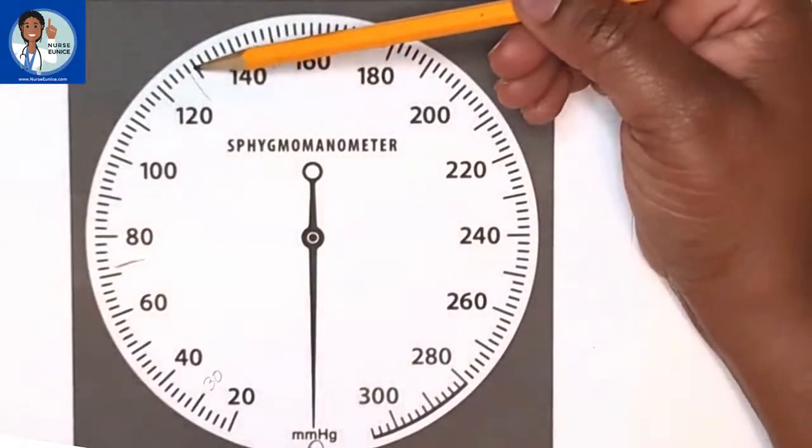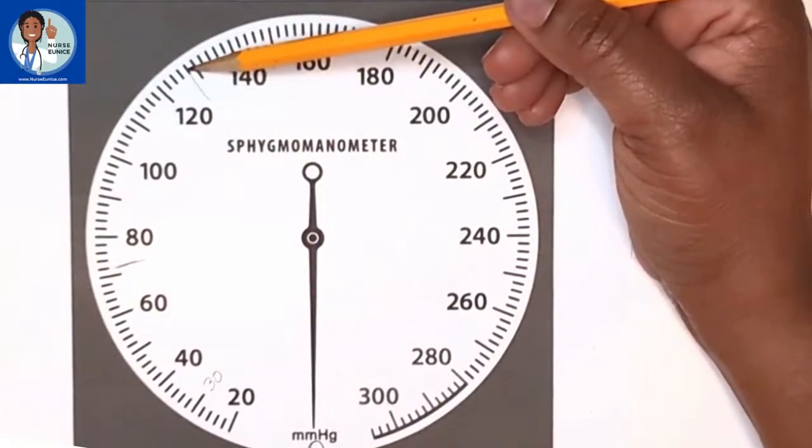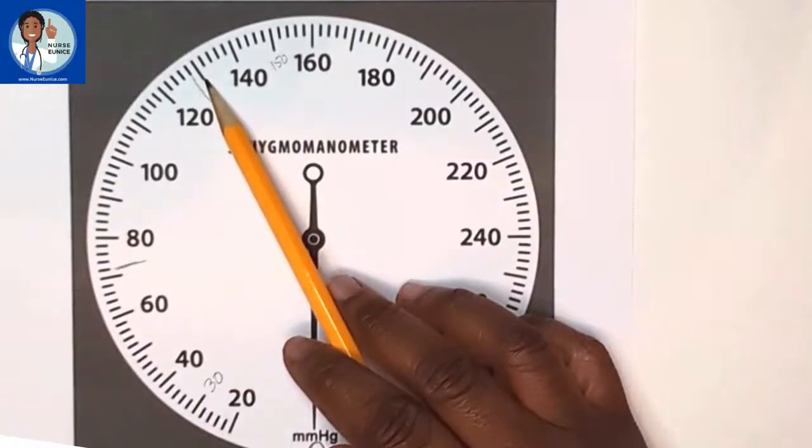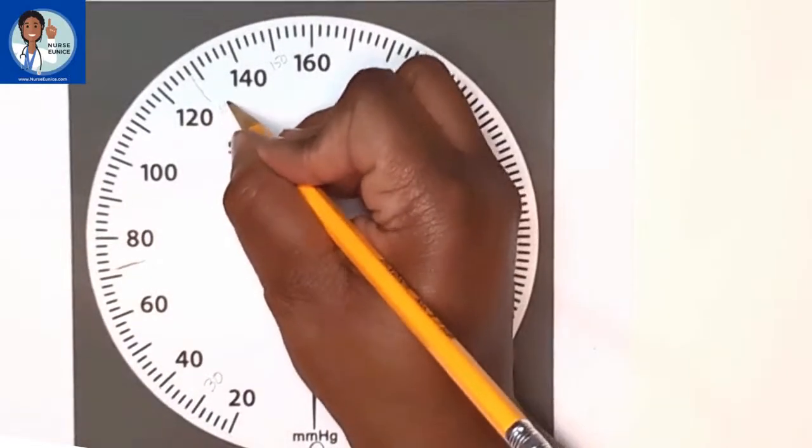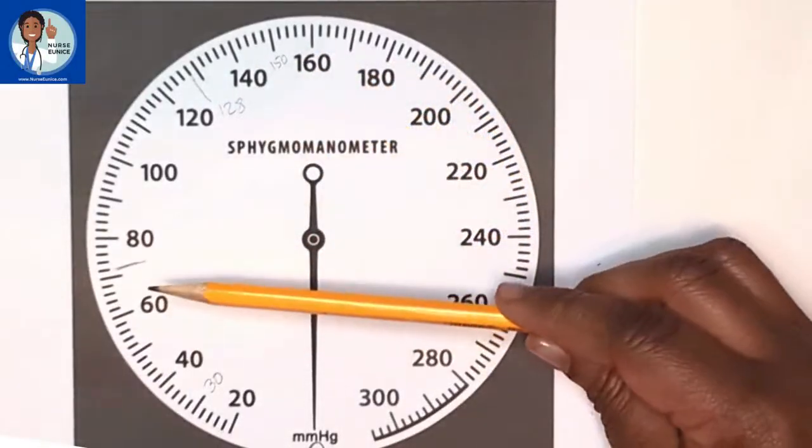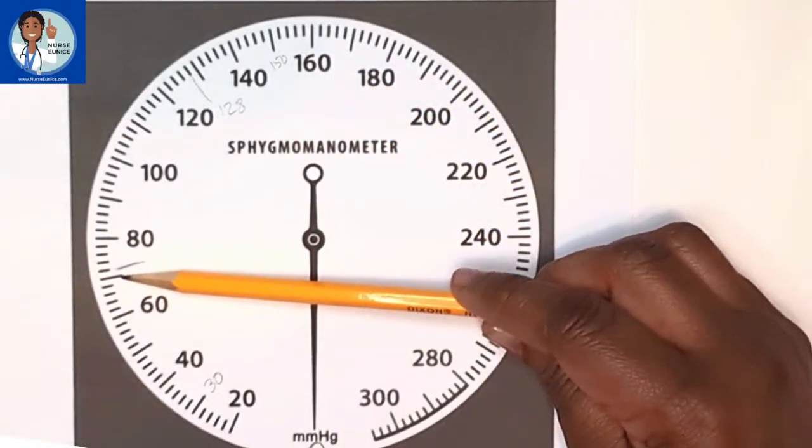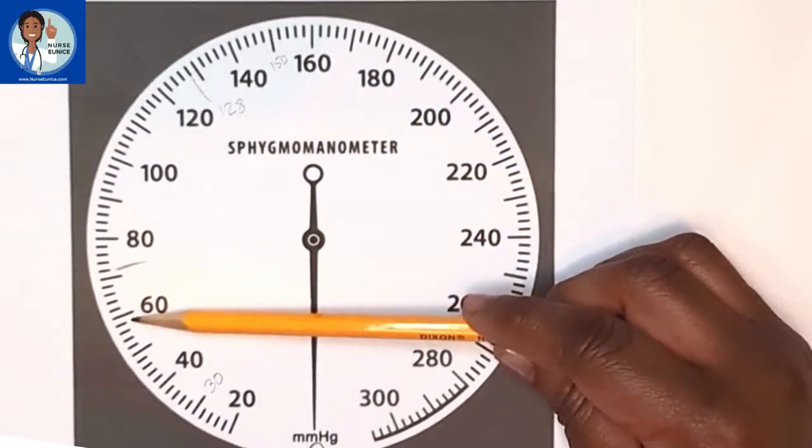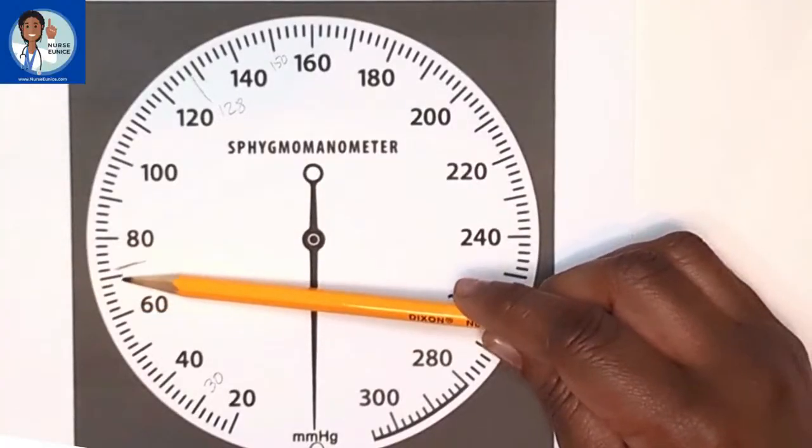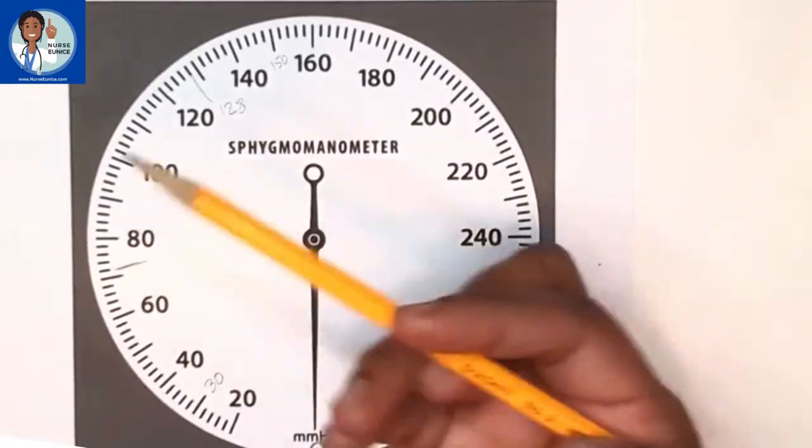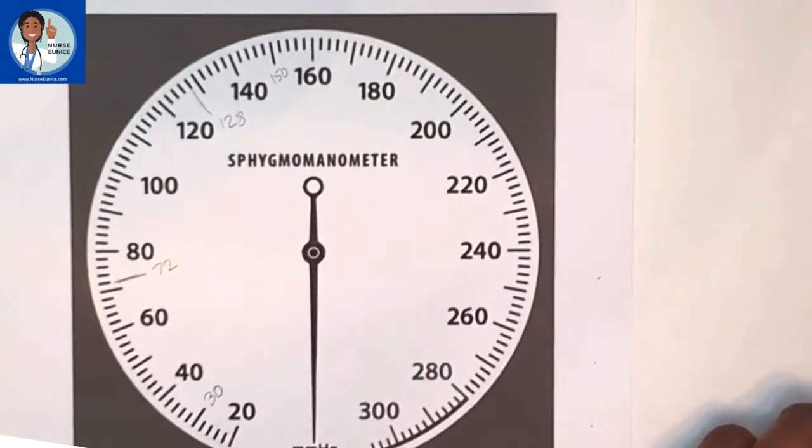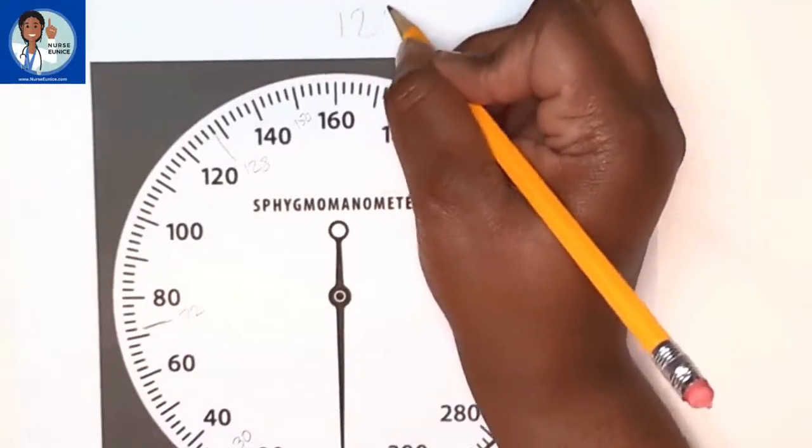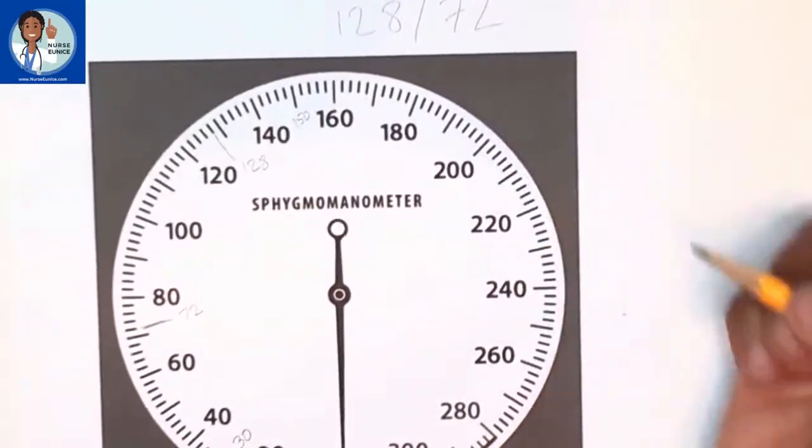You remember where you actually heard your sounds. One line below this dark line would represent 128. And then one small line above this line, if this was 60, this would have to be 70, that would make it 72. So if you were writing this blood pressure down, you charted as the blood pressure being 128 over 72.